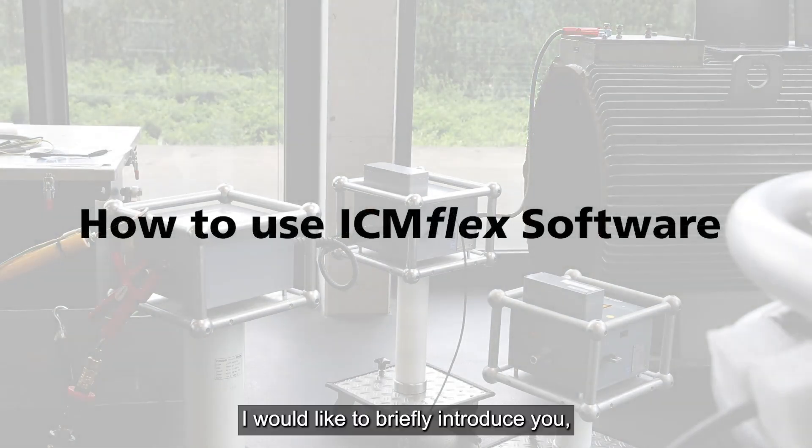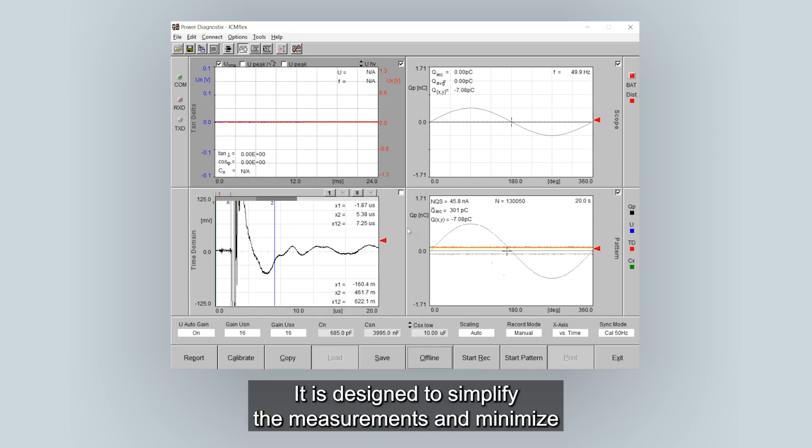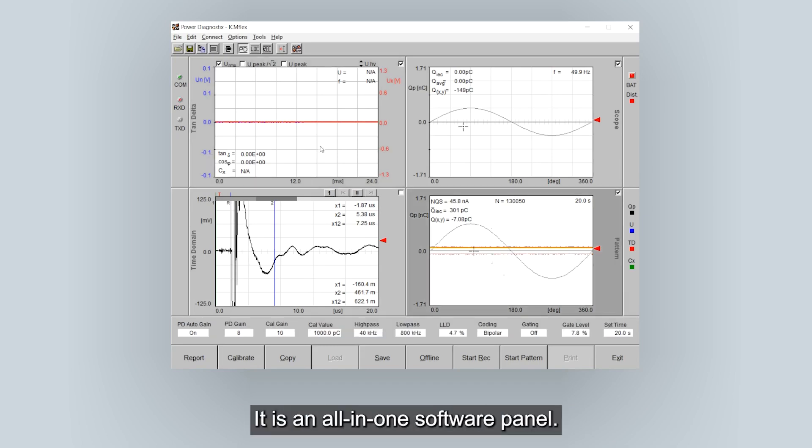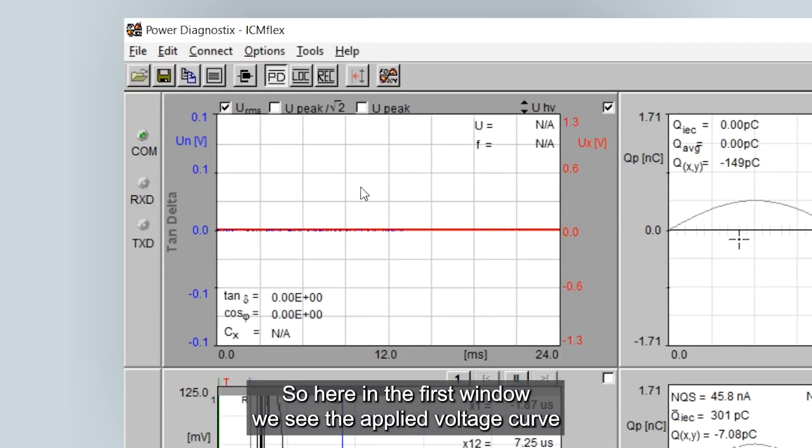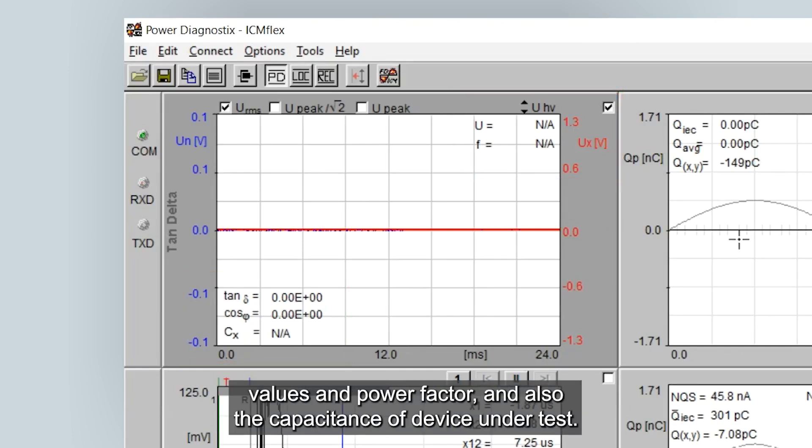I would like to briefly introduce you the ICM Flex software. It is designed to simplify the measurements and minimize the testing time. It is an all-in-one software panel. So here in the first window we see the applied voltage curve and the frequency of the applied voltage together with tan delta loss factor values and power factor and also the capacitance of device under test.